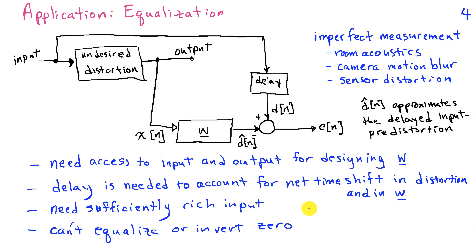As in the previous problem, you need a sufficiently rich input here so that you can recover the distortion over a wide frequency band. And finally, you can't equalize zero. So if this distortion zeroes out certain frequencies, we're never going to be able to recover those with our filter.